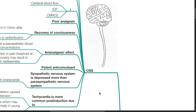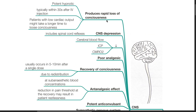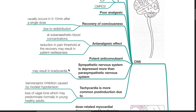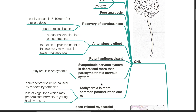Pharmacodynamics of thiopenthal — Central Nervous System. Thiopenthal produces rapid loss of consciousness. It is a potent hypnotic and loss of consciousness typically occurs within 30 seconds after IV injection. Patients with low cardiac output might take a longer time to lose consciousness. Thiopenthal causes CNS depression which includes spinal cord reflexes. There is decrease in cerebral blood flow, intracranial pressure, and cerebral metabolism. Thiopenthal is a poor analgesic. Recovery of consciousness occurs in 5 to 10 minutes after a single dose due to redistribution. Thiopenthal has an anti-analgesic effect at sub-anesthetic blood concentrations, and the reduction in pain threshold at recovery may result in patient restlessness. Thiopenthal is a potent anticonvulsant.